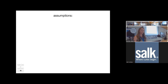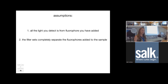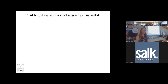Separating channels this way requires two significant assumptions: that all the light detected is from fluorophores we've added to the specimen, and that the filter sets completely separate the fluorophores in the sample. Let's go through these assumptions and talk about where they can fall apart and how you need to address them.